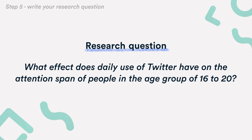Step 5: Write your research question by turning your research problem into a question. It sounds something like: "What effect does daily use of Twitter have on the attention span of people in the age group of 16 to 20?"